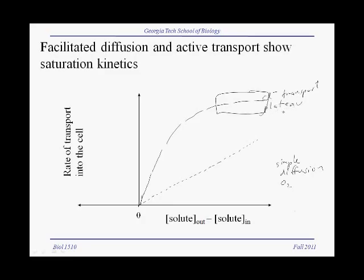Active transport will show similar saturation kinetics: the rate of active transport will again plateau when all the active transport proteins are working as fast as they can. The difference between active transport and facilitated diffusion is that active transport is able to import materials into the cell even against the concentration gradient. When the concentration difference is reversed — meaning there is already more inside the cell than outside — active transport can still continue working by using energy.